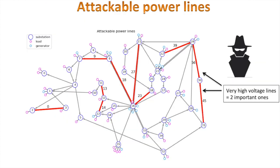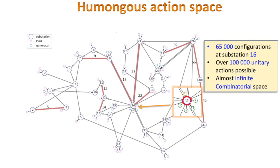As a reminder on some context about this robustness competition, here are the ten lines the opponent could attack during the scenario. The two lines on the right are especially tough because those are very high voltage lines capable of transporting greater flows. Another reminder is the humongous action space dimension, which makes exploration and discovery of useful topological configuration very difficult. Here, for instance, there are more than 65,000 possible configurations at substation 60. Over 100,000 possible unitary reactions over all substations are also possible. The combinatorial space of configuration is almost infinite in the end.